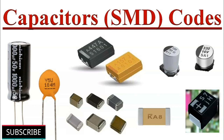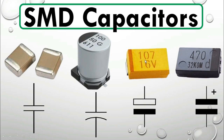Band-pass and band-stop filters: Capacitors are also used in band-pass and band-stop (notch) filters. In a band-pass filter, capacitors in conjunction with other components allow a specific range of frequencies to pass through while attenuating frequencies outside that range. In a band-stop filter, capacitors block a specific range of frequencies while allowing frequencies above and below that range to pass through.